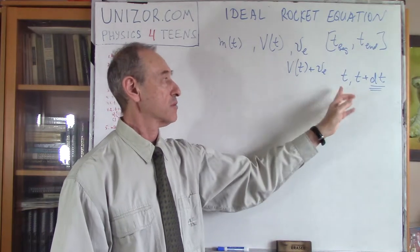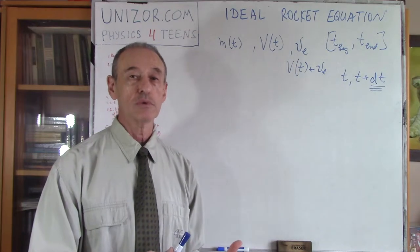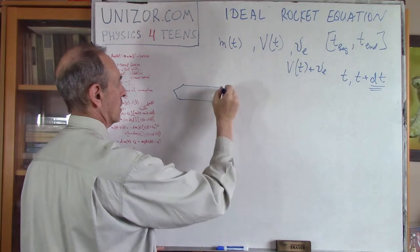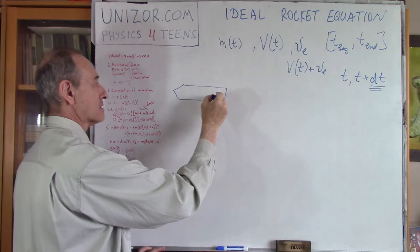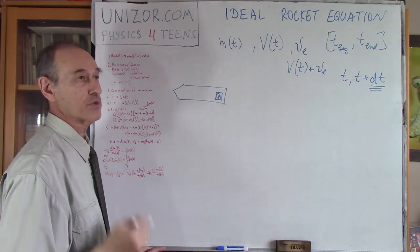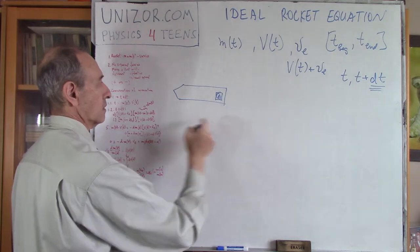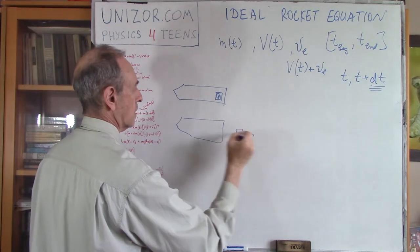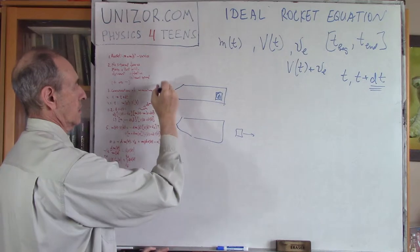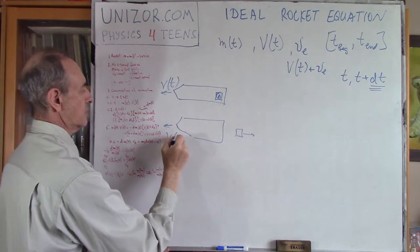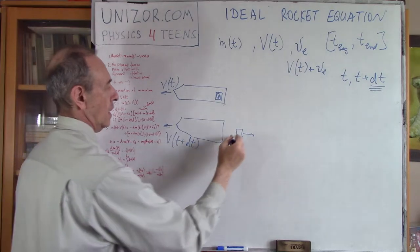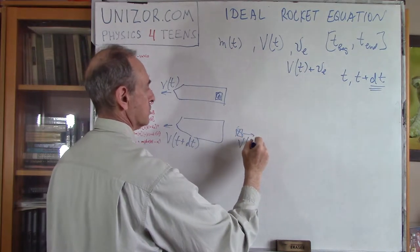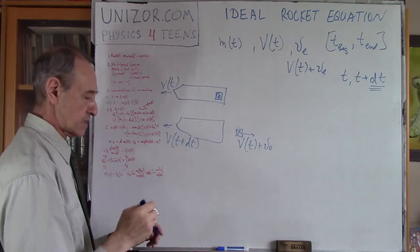Before this period of time at moment t, I have a certain momentum of the entire system — the rocket and a certain amount of propellant in it. What happened after, at moment t plus dt? My entire rocket has speed v(t plus dt), and the propellant which we have exhausted had speed v(t) plus ve.